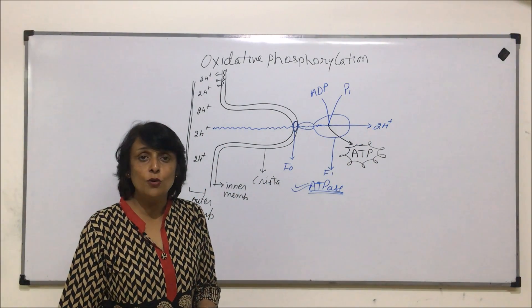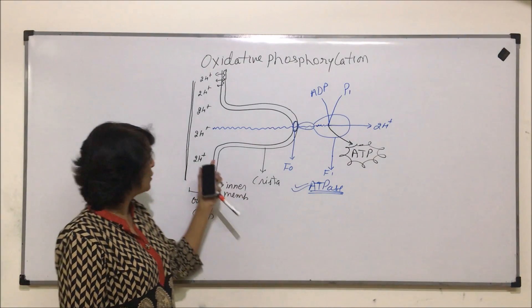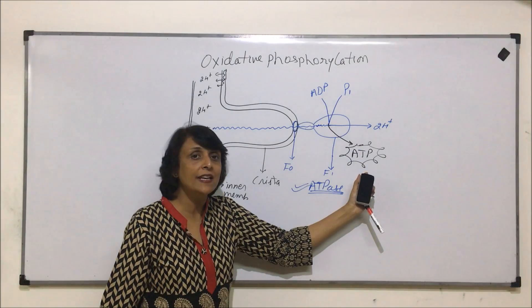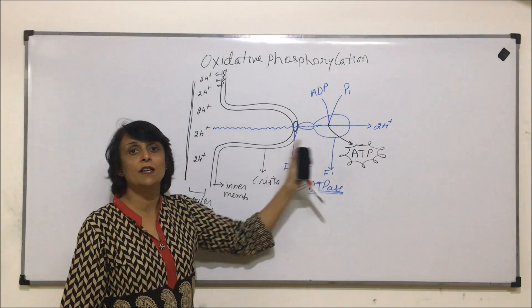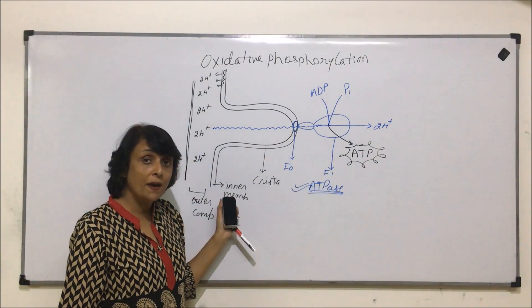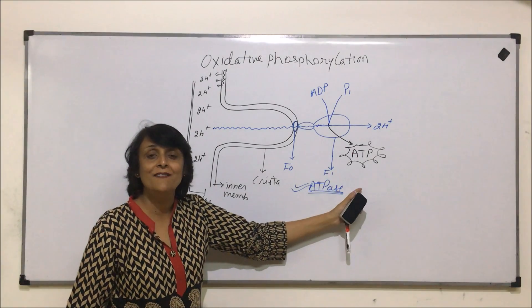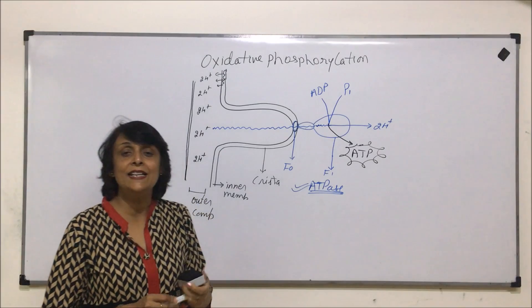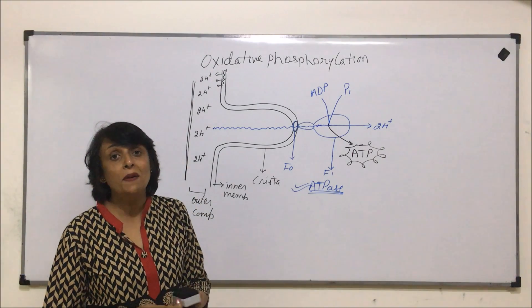From 1 NADH, 3 pairs of protons were pumped out. When 1 pair goes back, we get 1 ATP. 2nd pair will give us 2nd ATP. When 3 pairs go back, we get 3 ATP. And that is why we said that 1 NADH2 is worth 3 ATP. So this is the place where we are able to encash those checks of NADH and FADH2.